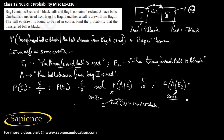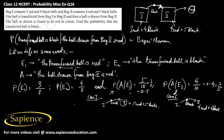Case two: if a black ball is transferred from bag one to bag two, then bag two will have four red balls and six black balls — ten total. So the probability of drawing a red ball from bag two is 4/10, which equals 2/5. So P(A|E2) = 2/5.